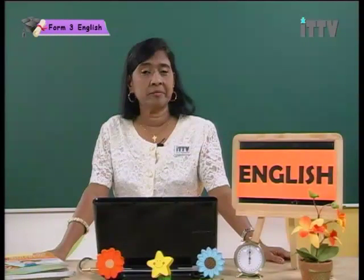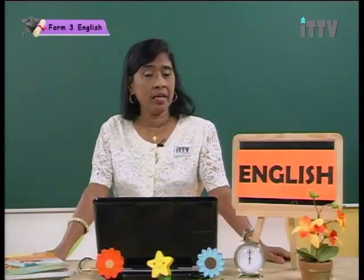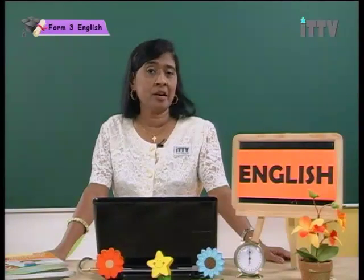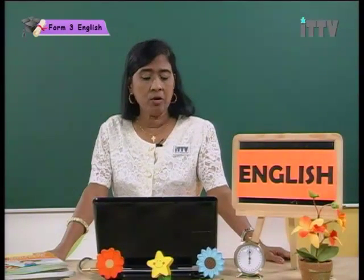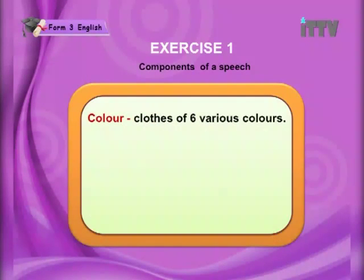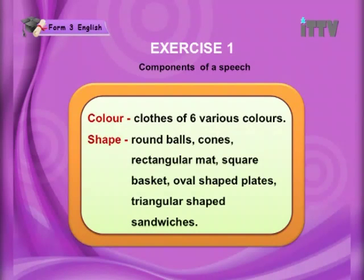Color — we are still on color, and different colors are all adjectives. Here, clothes of six various colors, so we are going to have colorful clothes. Cones — shape — the different shapes are all adjectives. Round balls. Cones.